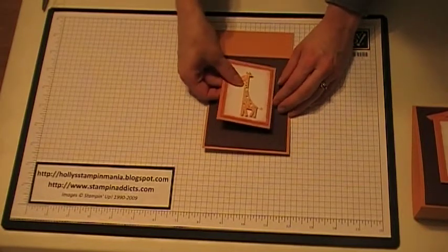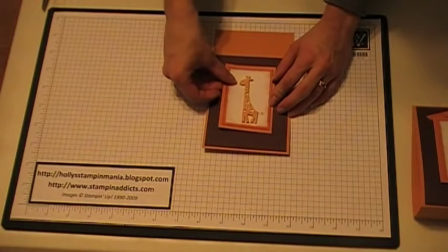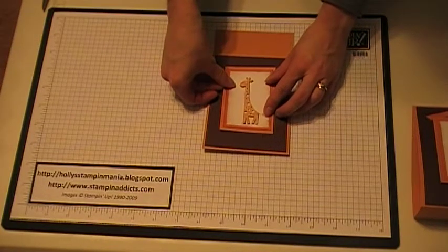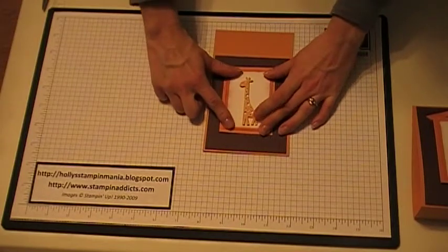You're going to want to just place it a little bit right there. You've got to save room for where you're going to tie your ribbon through to close your box.